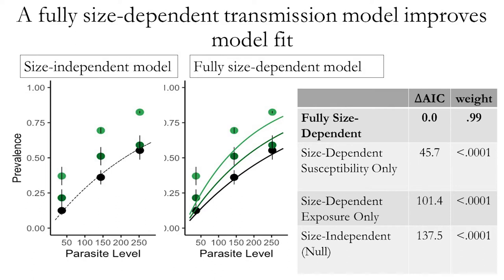We then fit these data to our models. The size-independent model had no ability to change with different size-structured populations and fit the data quite poorly. In contrast, the fully size-dependent model — where both exposure and susceptibility vary with body size — showed a much better fit and could adjust as we fed it different population size structures. When competed against all four model variants, it really blew the others out of the water.